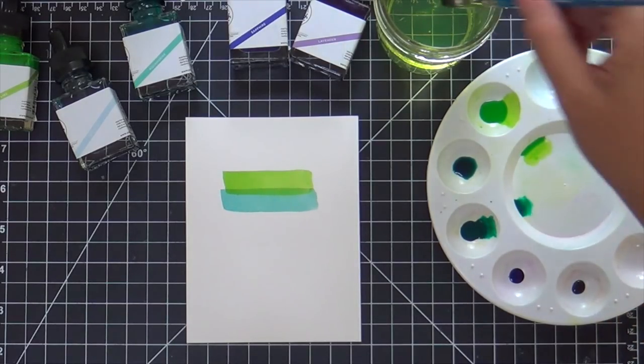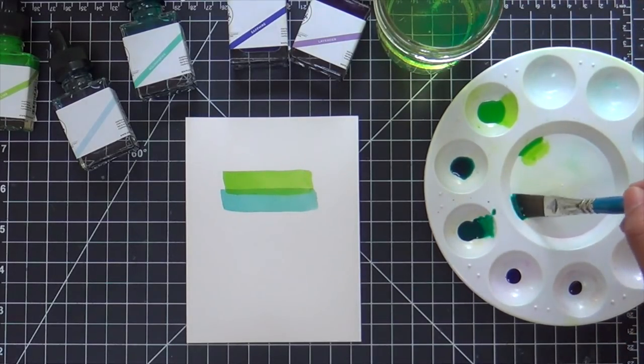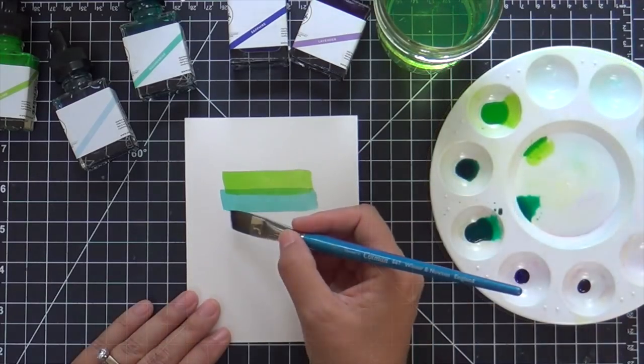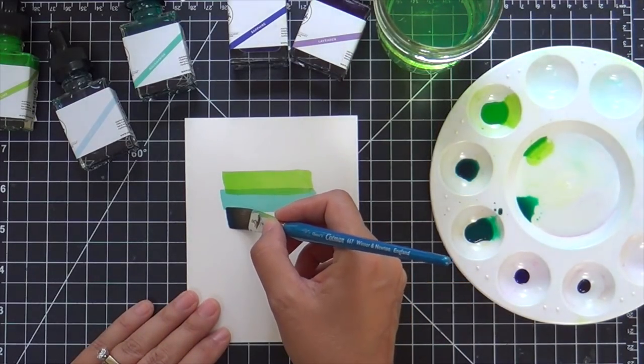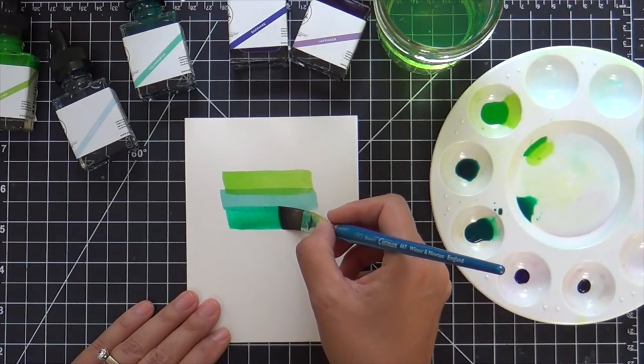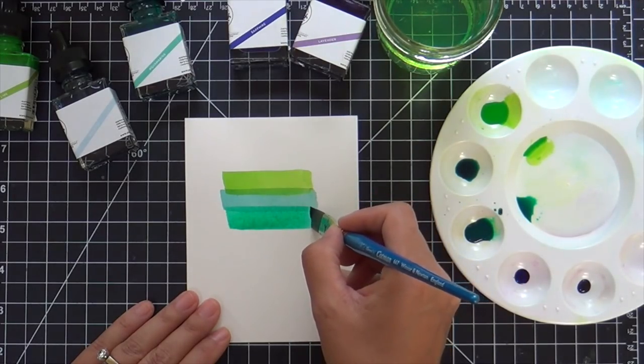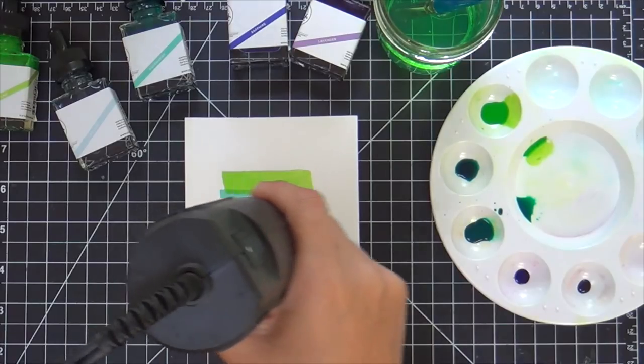Now I'm going in with the Aquamarine. Sometimes I dip it in the water to dilute it. I don't want it to be too dark, but I don't want it to be too light. Trying to find that sweet spot of the right vibrancy. So there is Aquamarine.